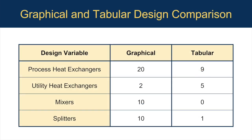The heating utility would be provided by methane combustion at approximately 4,100 pounds per hour, and cooling utility would be fulfilled using cooling water. Although both methods provide similar utility requirements, the heat exchange network designs differ significantly. The graphical method would require 22 heat exchangers and 20 mixers and splitters, while the tabular method requires only 14 heat exchangers and one splitter. This much simpler design is why the tabular method is more favorable among engineers when performing pinch analysis.